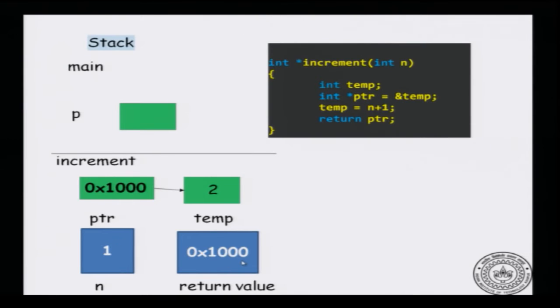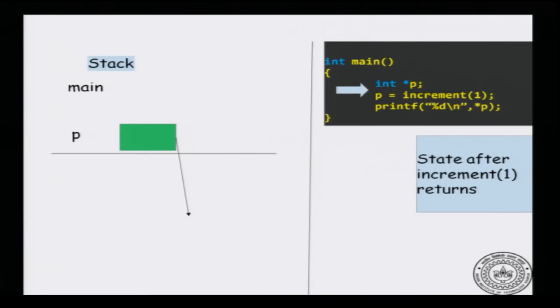Now ptr points to temp, and we return ptr. So the return value is 1000, which is the address of temp. When you return to the main function, as soon as any function finishes the memory allocated to the function is erased. So p will contain the address 1000, but the space meant for temp has already been erased. p is pointing to a junk value — a dangling pointer — pointing to a location which is no longer meaningful.